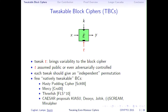Unfortunately, there are very few natively tweakable block ciphers. There are some early examples: Hasty Pudding cipher and Mercy. There's Threefish, the block cipher underlying Skein the hash function. And from the CAESAR competition, there are proposals like Kiasu, Deoxys, Joltik, Scream, Ice Cream, and Minalpher. But that's roughly all there is.